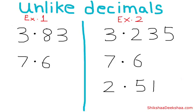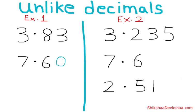We can convert unlike decimals to like decimals just by putting a zero at the end. For example, the maximum number of decimal places is two, so we can convert the number to point six zero by putting a zero at the end. Since trailing zeros in a decimal have no value, seven point six zero is actually seven point six — and now these two numbers are like decimals.